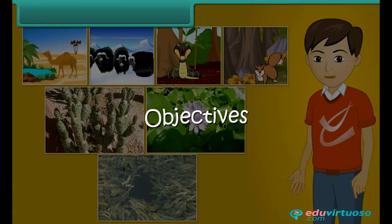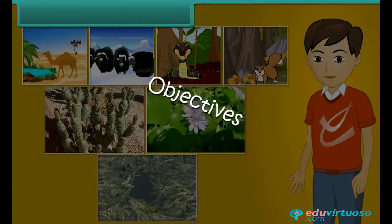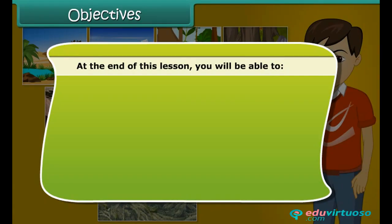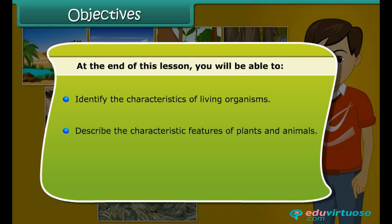Objectives: At the end of this lesson, you will be able to identify the characteristics of living organisms and describe the characteristic features of plants and animals.